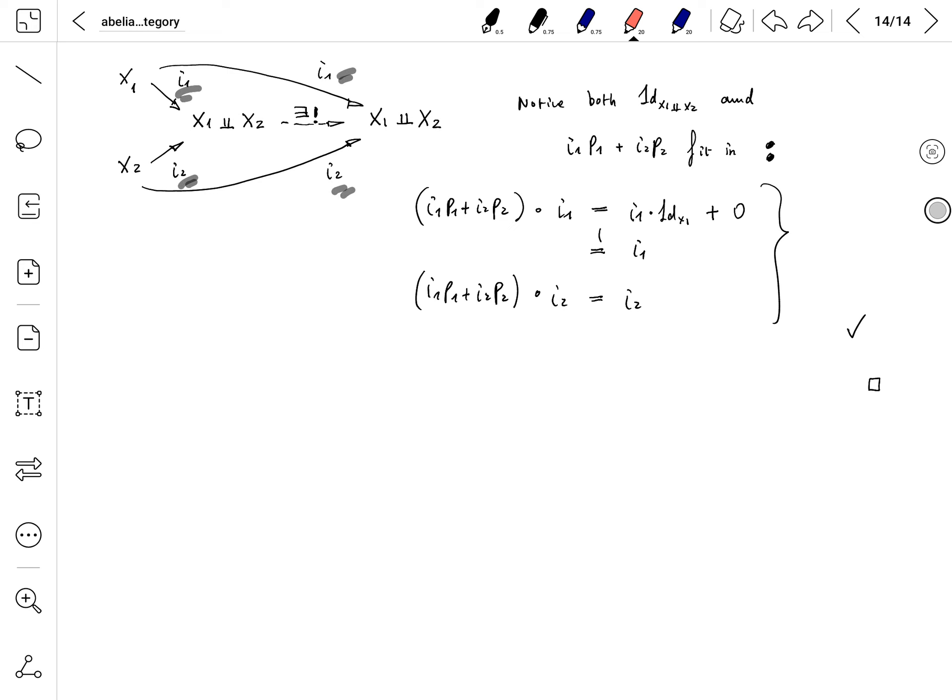By the universal property of X1 coproduct X2, there exists a unique map such that this diagram commutes. But we are putting I1, I1, I2, I2, so the unique map would be the identity one.